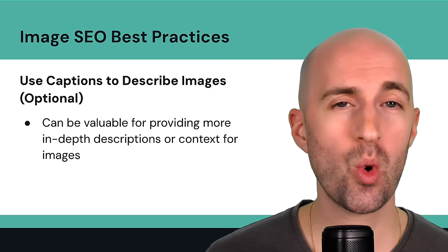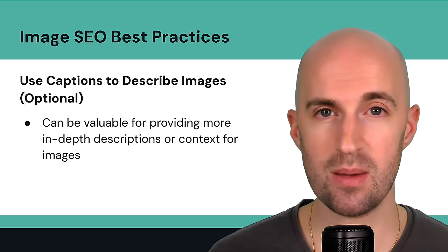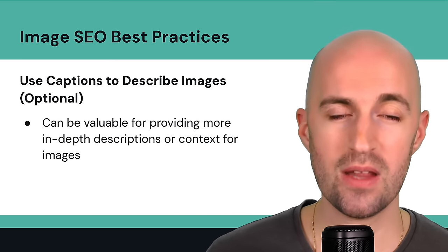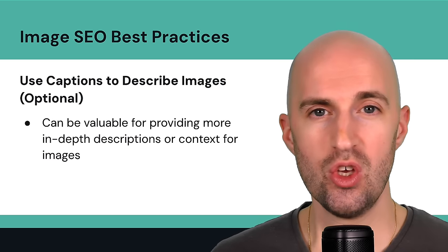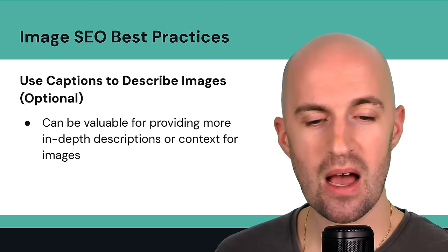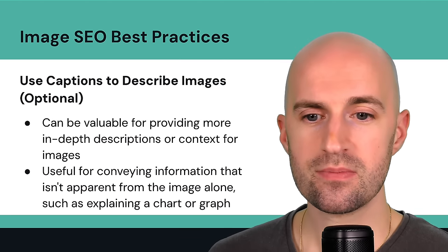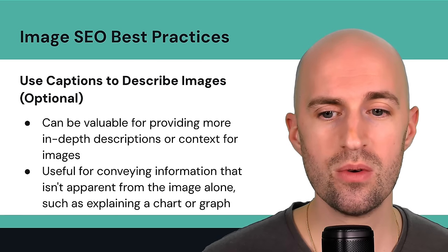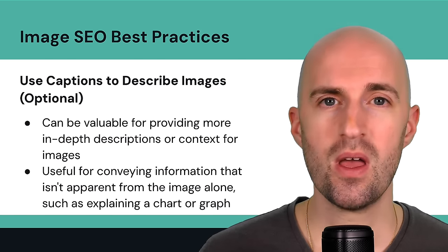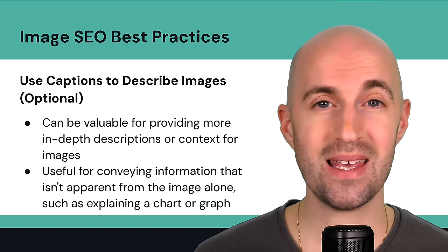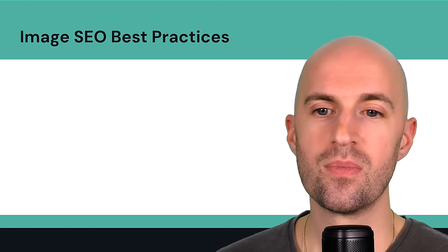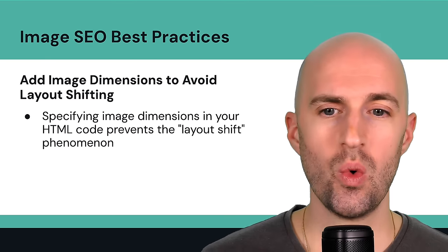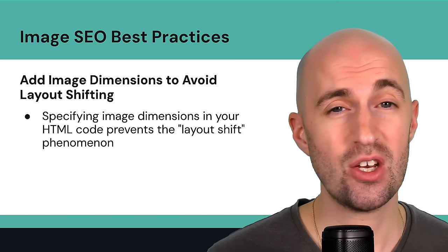Use captions to describe images. This is optional but can be valuable for providing more in-depth descriptions or context. Captions are visible to the user in the content — usually below the image in smaller font — and provide a bit more information about it. They're useful for conveying information not apparent from the image alone, such as explaining a chart or graph, or providing some story behind why you shared that image.